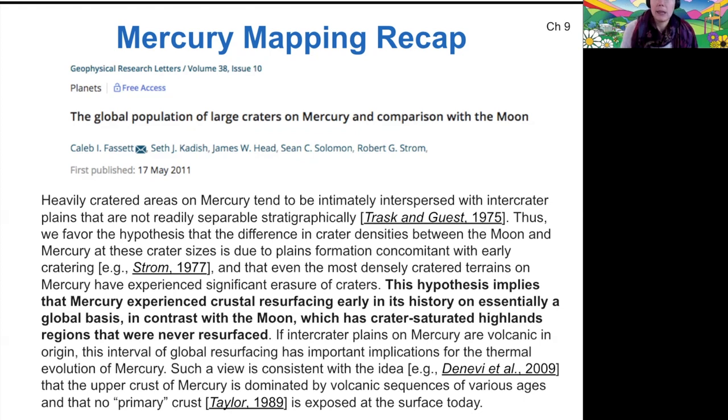I did a little digging online and found this research article back from 2011, but it says basically that the hypothesis is that Mercury experienced what they call crustal resurfacing, that just means lava flows, early in its history on essentially a global basis. That means that the lava flows affected everywhere, rather than on the moon where it has mostly cratered regions of the highlands that were never resurfaced. This is one reason why you might be interested in crater counting, because it can help to tell you what happened in the history of Mercury. It can say Mercury seems like it had lava flows across its entire surface, whereas the moon did not experience that widespread lava flow. I thought that was interesting, hopefully adds a little bit more to the story of why we would want to make maps, count craters, things of that nature.